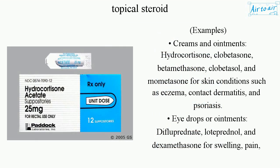Examples. Creams and ointments: hydrocortisone, clobetisone, betamethasone, clobetasol, and mometasone for skin conditions such as eczema, contact dermatitis, and psoriasis.